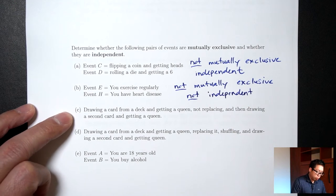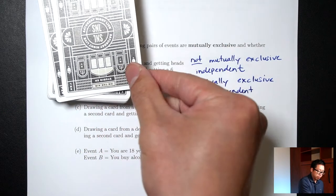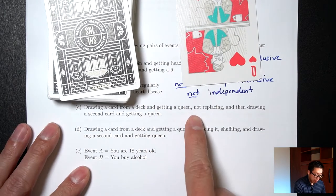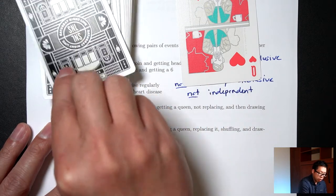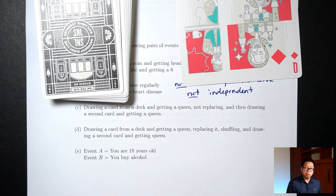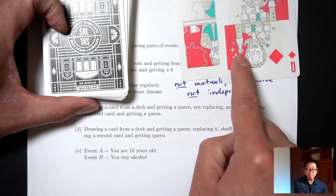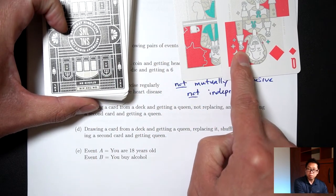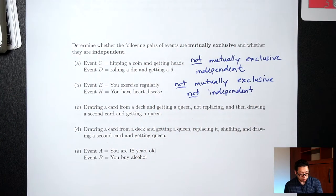Part C: drawing a card from a deck and getting a queen, then not replacing it and drawing a second card and getting a queen. First, are these two things mutually exclusive? Can you get a queen, not put the card back, draw a second card, and get a second queen? Yes, it just happened right there. Because the answer is yes, this will be not mutually exclusive.